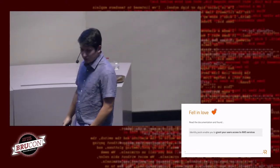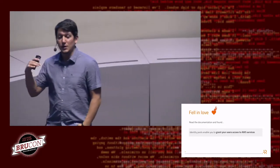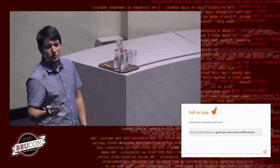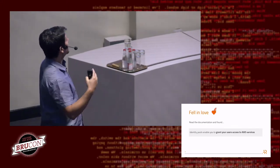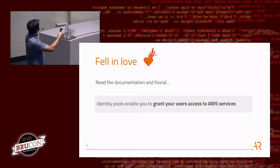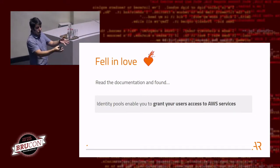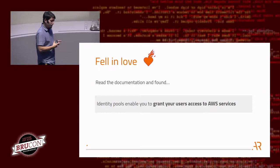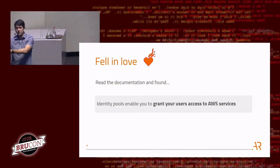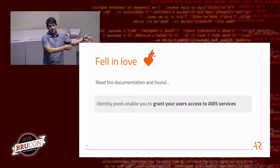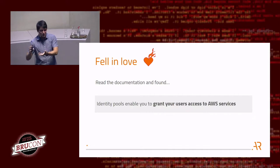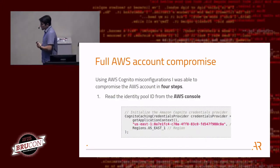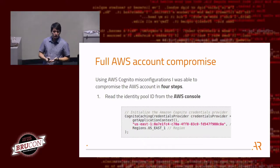So I went to the documentation, like any good hacker does. If you are not going to the documentation, do it — it will improve your skills as a hacker. And this is what I found: identity pools enable you, the developer, to grant your users and users of the application access to AWS services. So end users access AWS services and users access your infrastructure. What could go wrong? Actually, a lot.